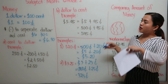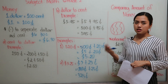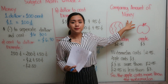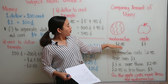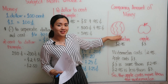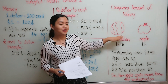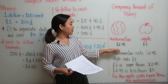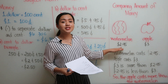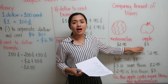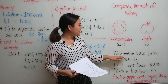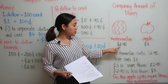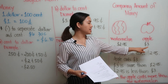So that's it for converting dollar to cents and cents to dollar. Now let's try to compare the amount of money. So we have here an example — this is a watermelon and this is an apple. For the watermelon, it costs $2.95, and for the apple, it costs $3. As we all know, dollar is greater than cents. So this is only $2.95, and this is $3.